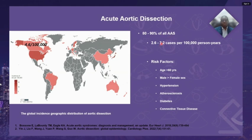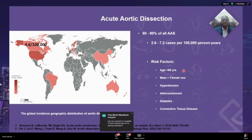Globally, the incidence ranges between 2.6 to 7.2 cases per 100,000 person-years, and in Canada they are found to be about 4.6 per 100,000. The risk factors include age more than 60 years, males more than females, hypertension, atherosclerosis, diabetes, and connective tissue disease.